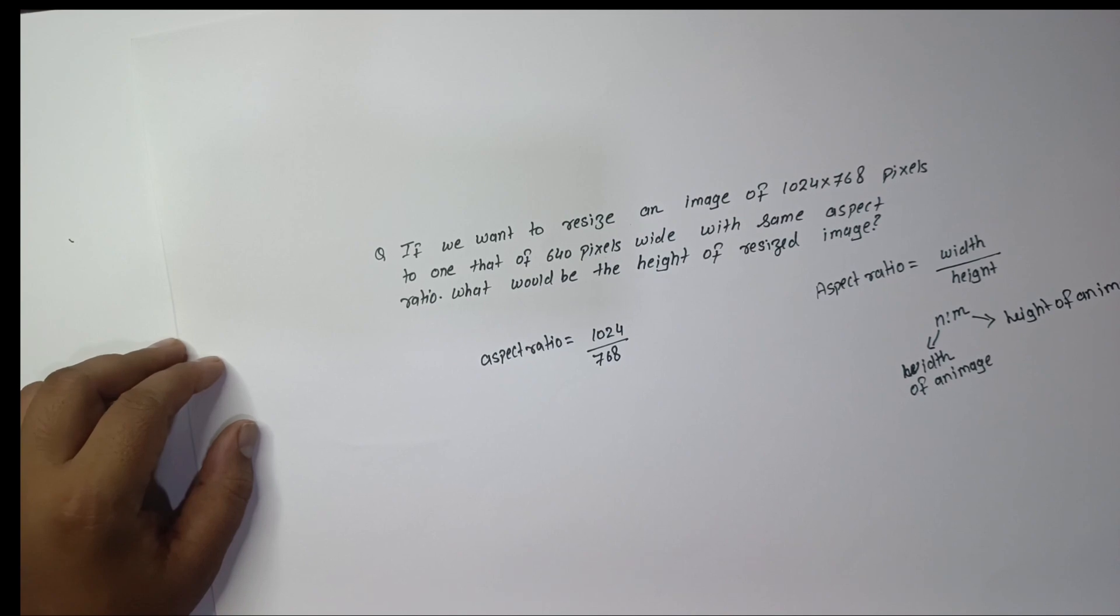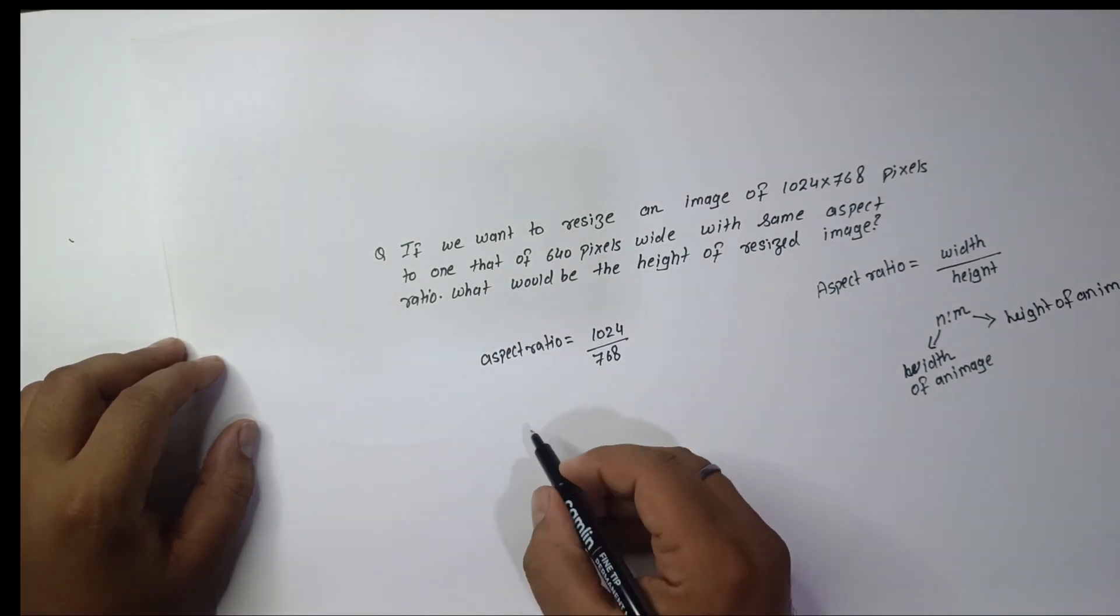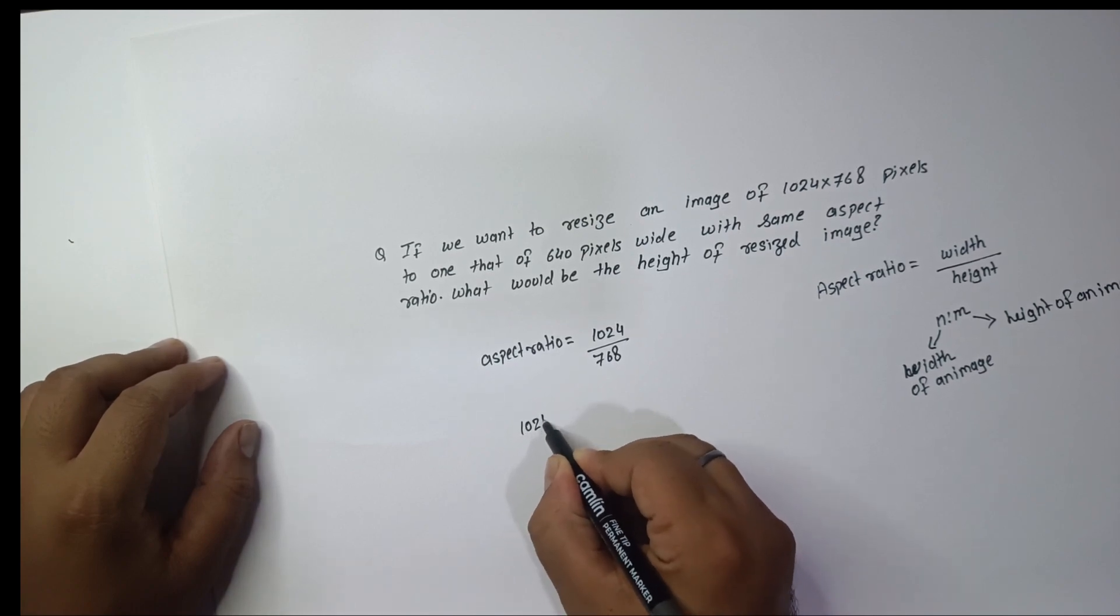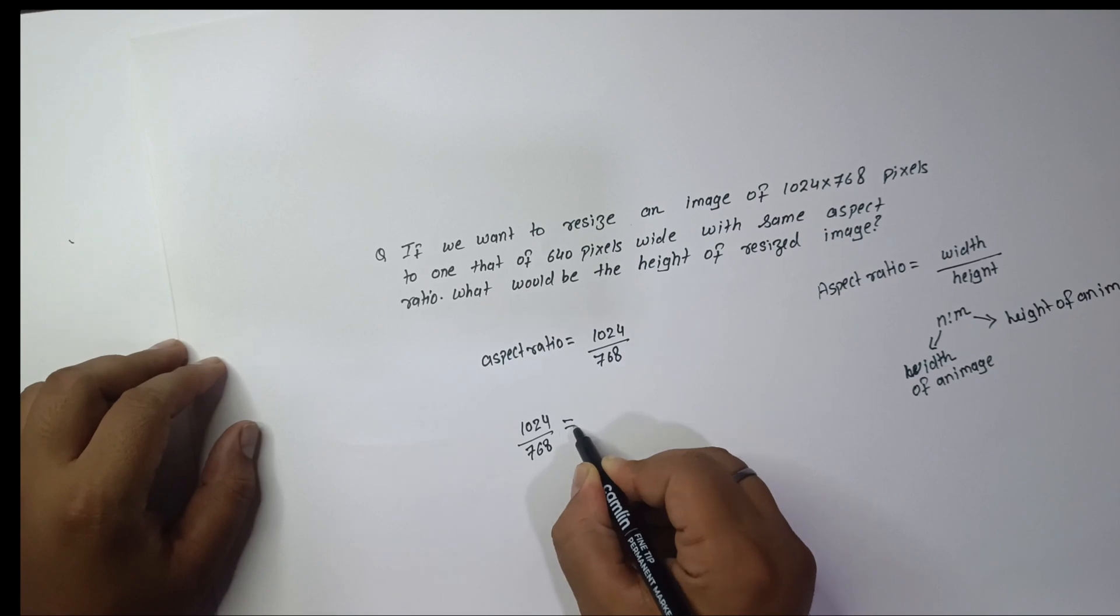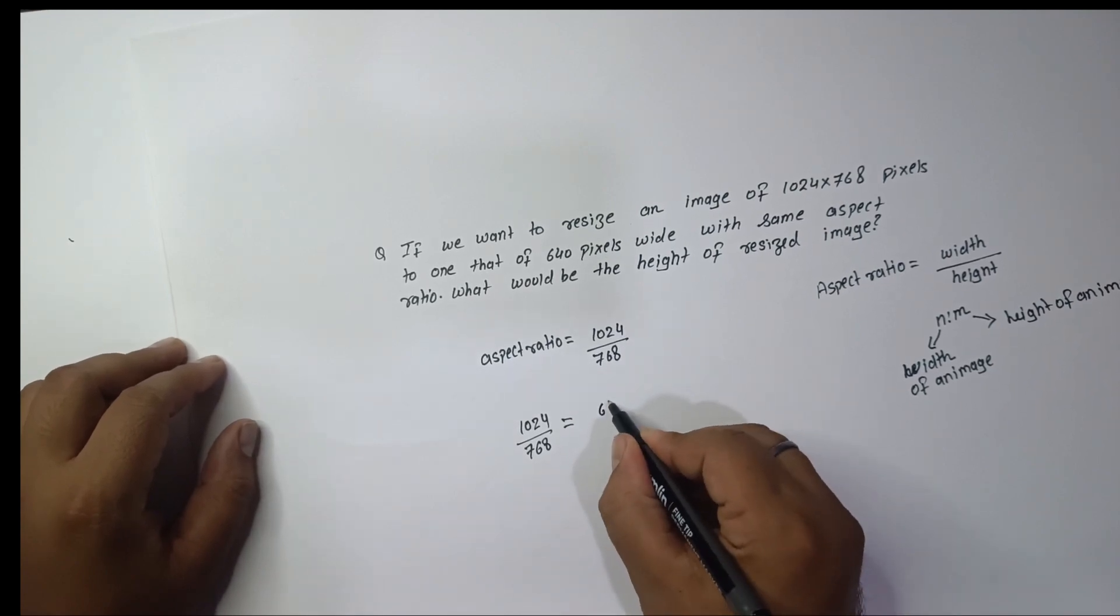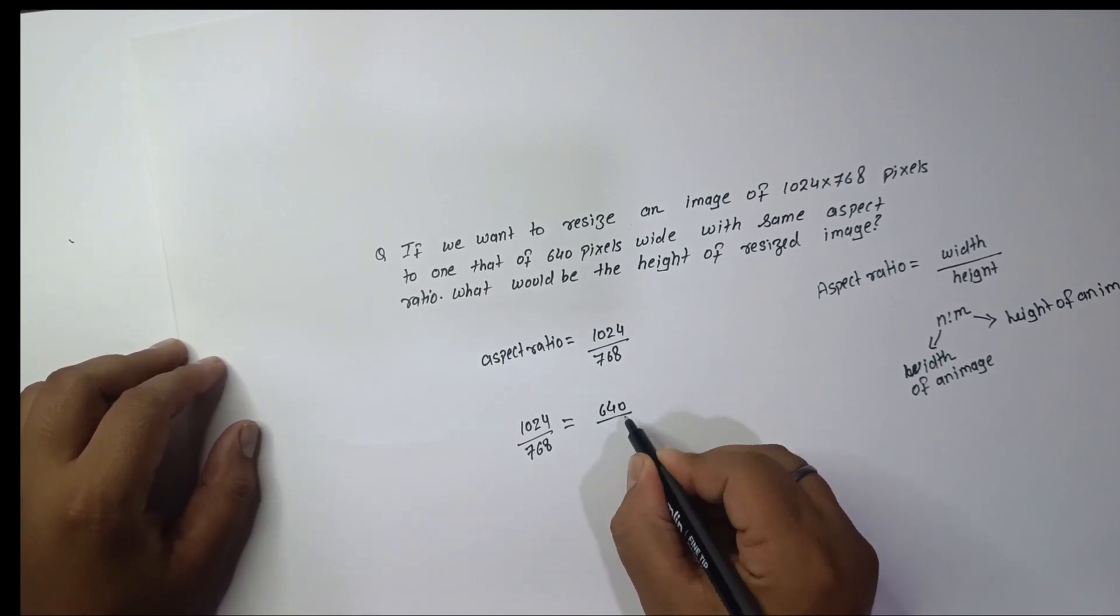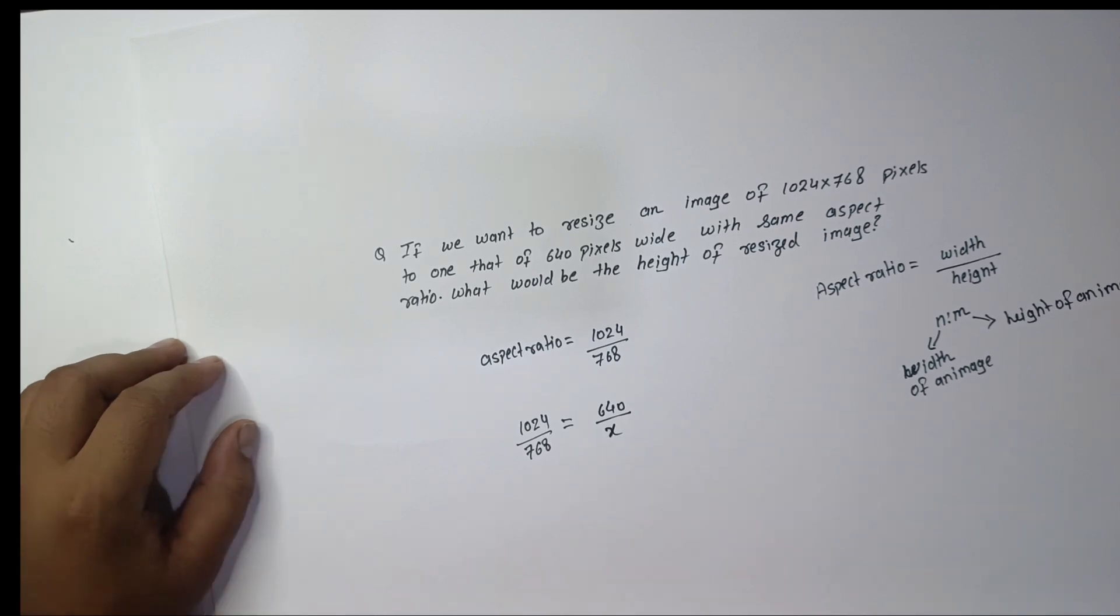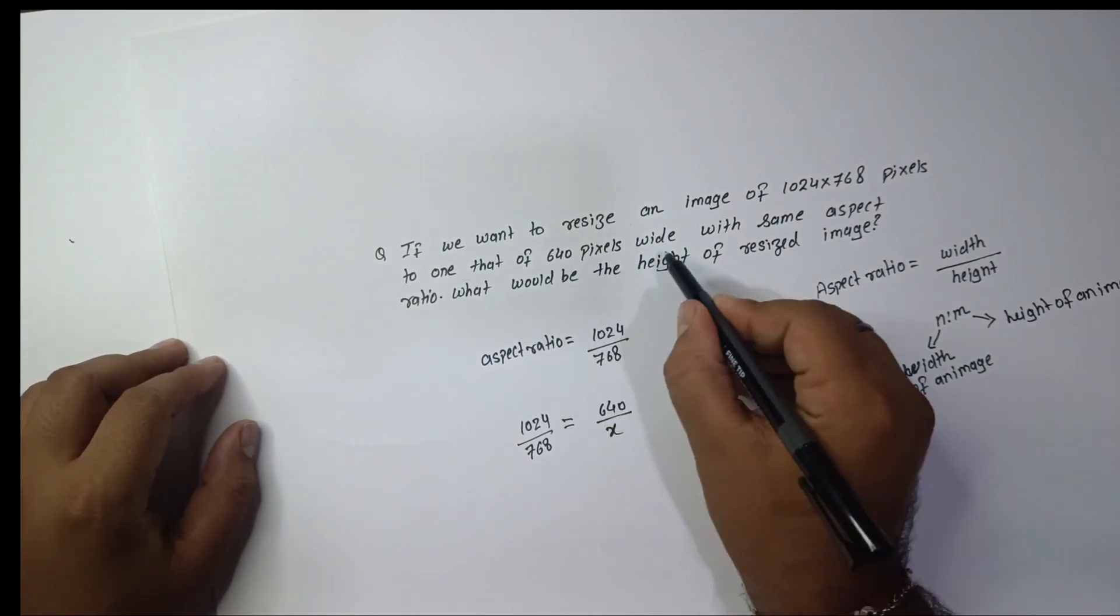It means 1024 divided by 768 is equivalent to 640 divided by X, where X is the height of the resized image. In this question they have asked about the height of the resized image.